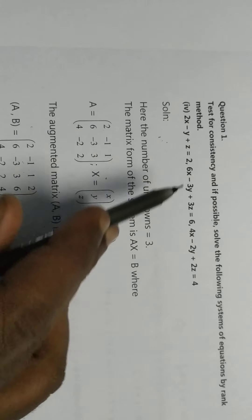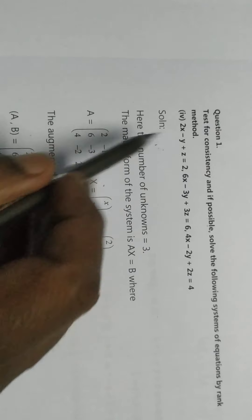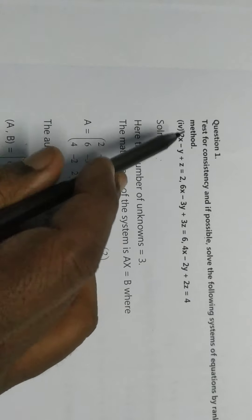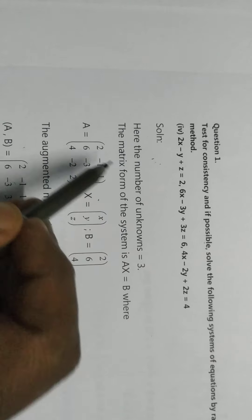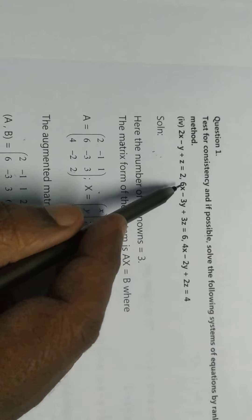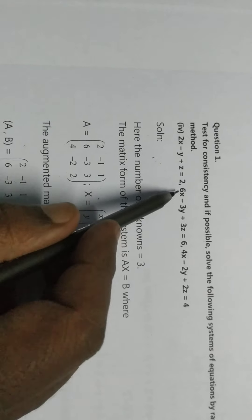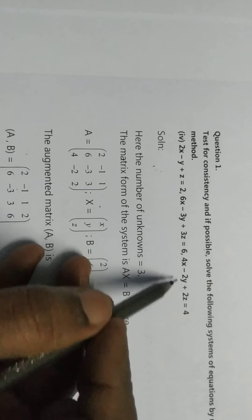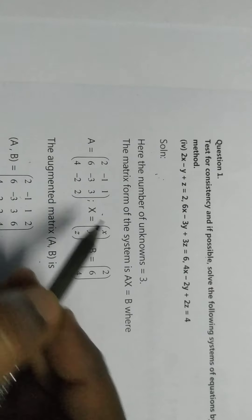Matrix form AX equal to B. First, A is the coefficients of X, Y, Z. So, 2 minus 1, 1 is the first row. 6 minus 3, 3 is the second row. 4 minus 2, 2 is the third row.